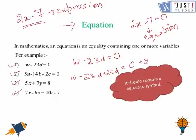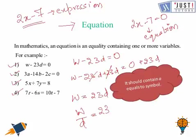...equals 0 plus 23d. These two terms cancel out and we are left with w equals 23d, which we can write with variables on one side. This is how we solve equations.